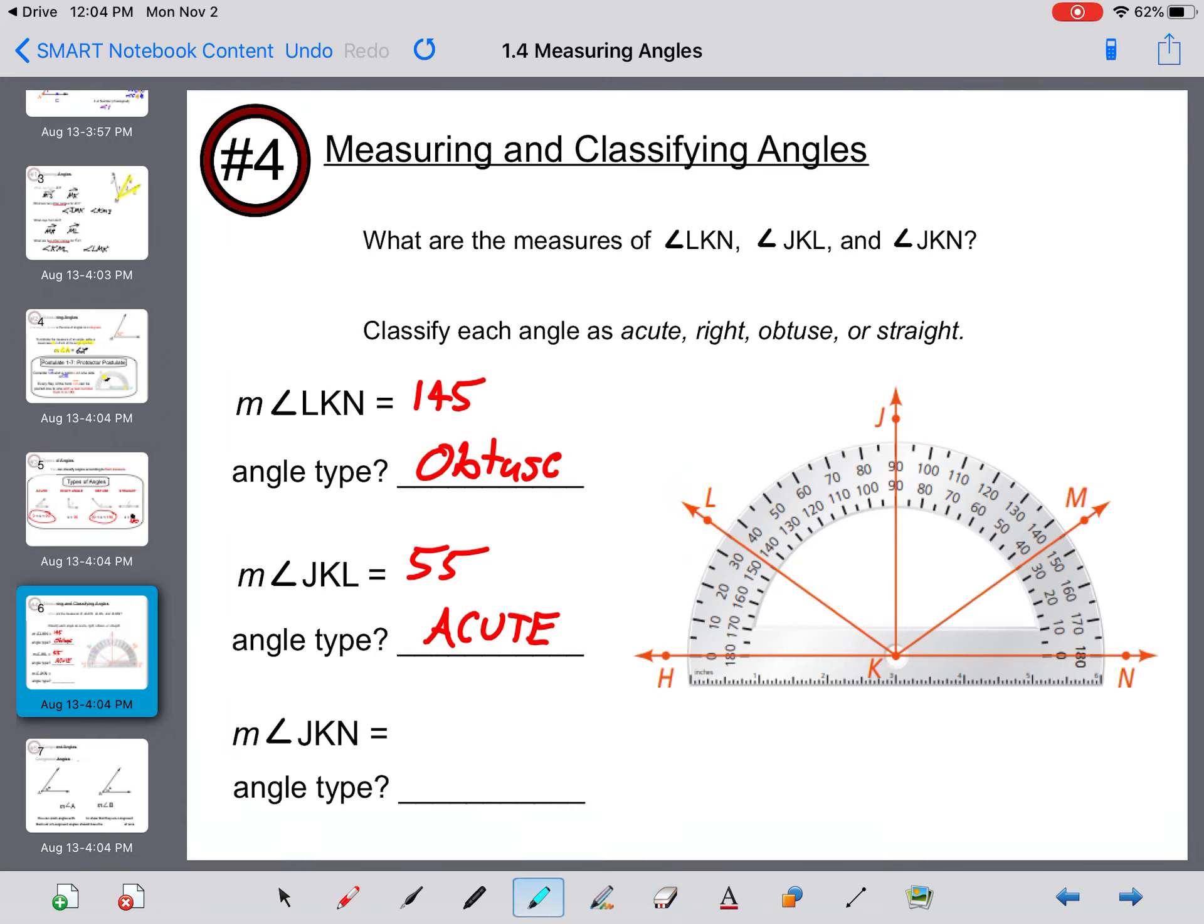The measure of angle JKN. That starts at zero and finishes at 90. So that's a 90 degree angle. And all 90 degree angles are called right angles.